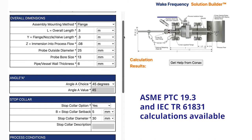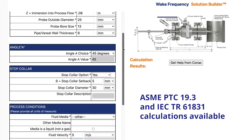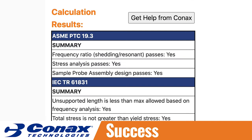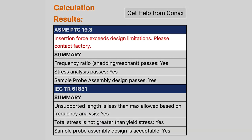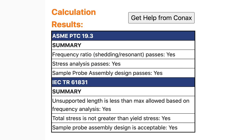Simply enter data for the specific calculations you want to run. Click the Calculate button and you'll receive immediate results. If the design doesn't pass, you'll see exactly what data needs to be adjusted. If the design is approved, you can contact CONAX to place the order.